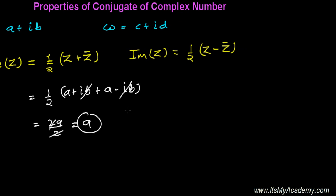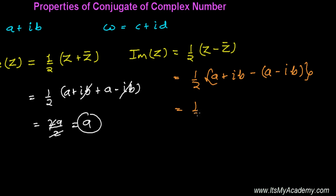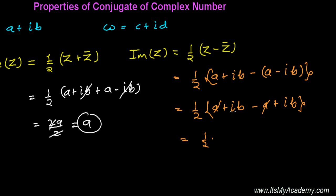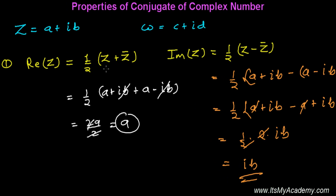For the imaginary part, it is simply half of the difference of the complex number and its conjugate. The complex number is A plus iB, minus the conjugate A minus iB. Opening the bracket: A + iB − A + iB. The A terms cancel, giving 1/2 times 2iB, which simplifies to iB. So the real part equals half the sum, and the imaginary part equals half the difference of the complex number and its conjugate.